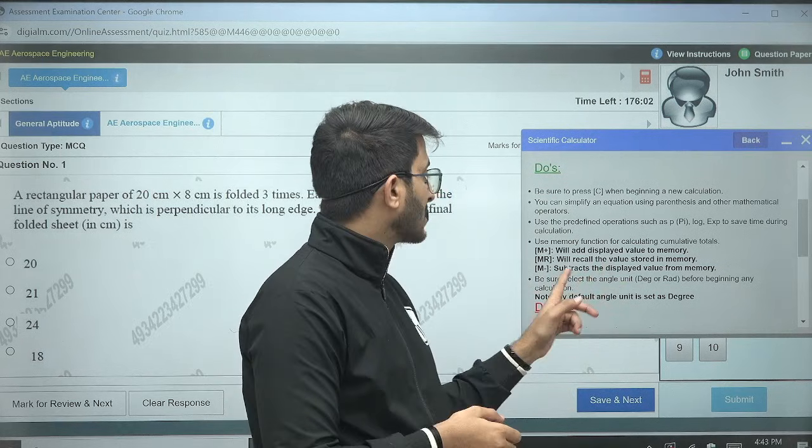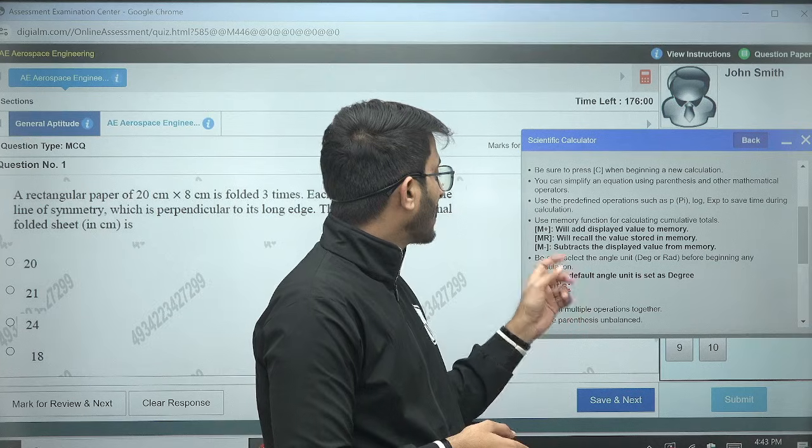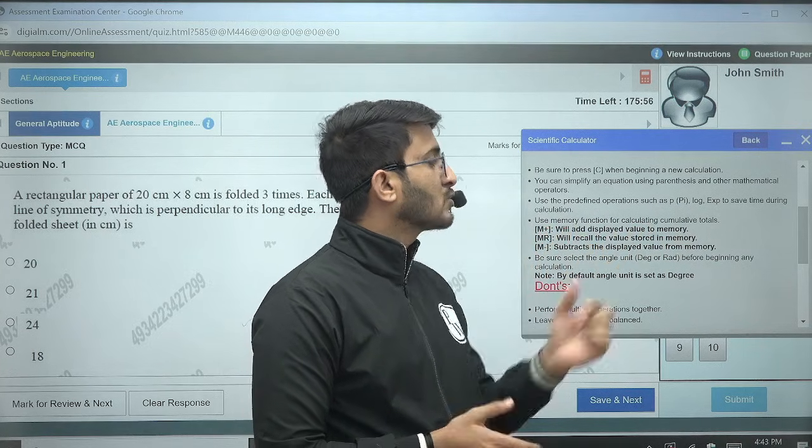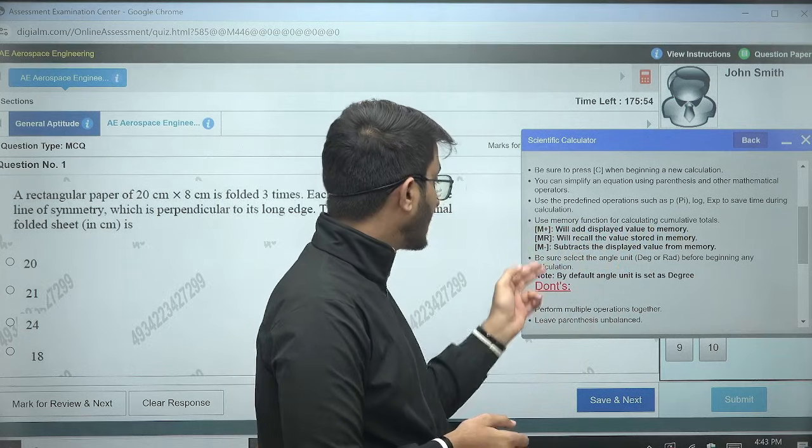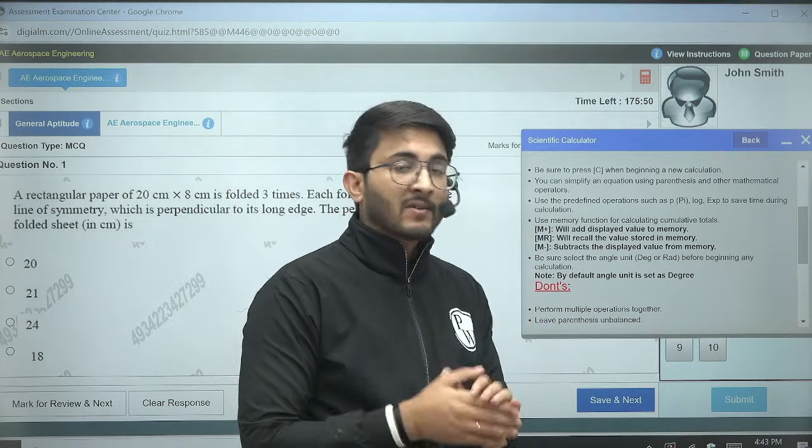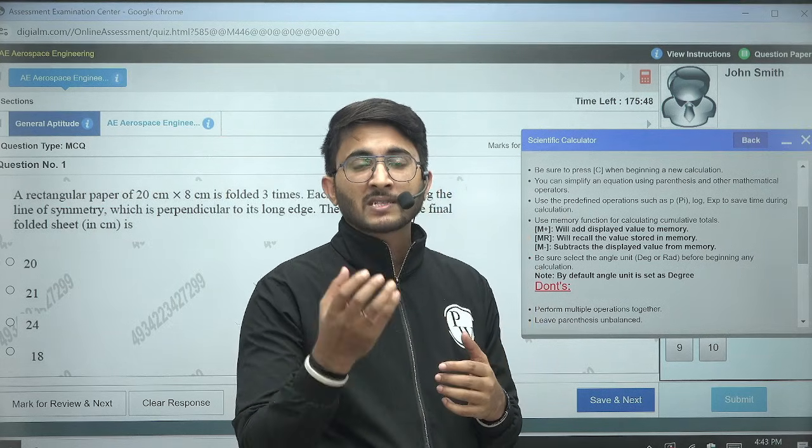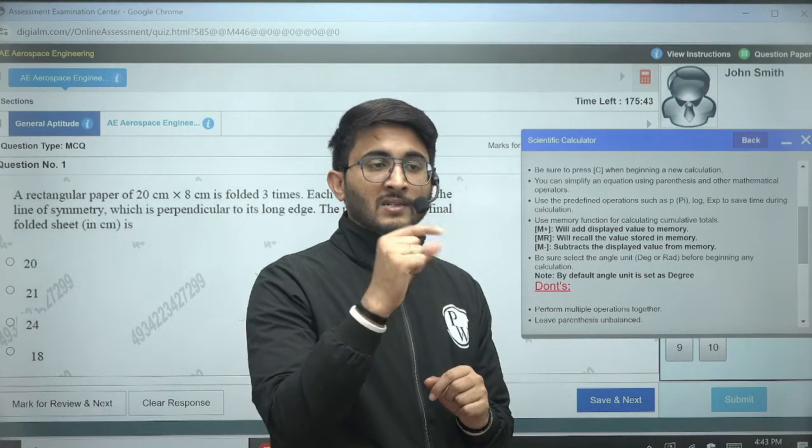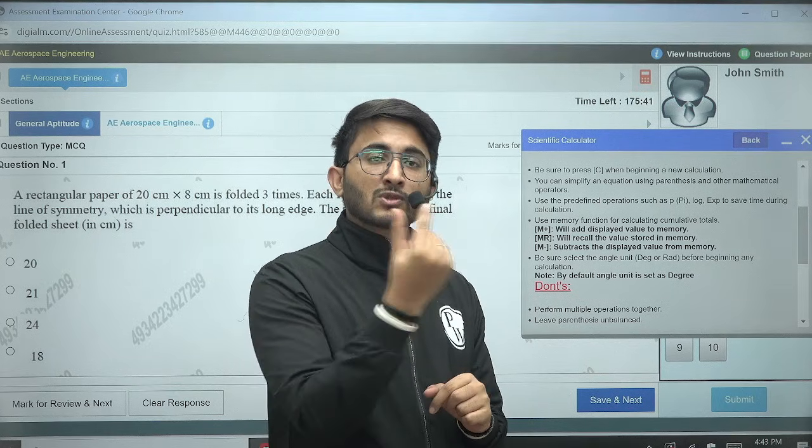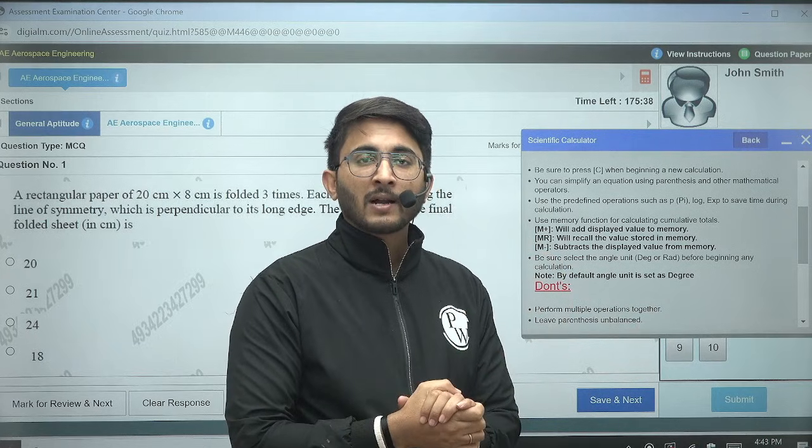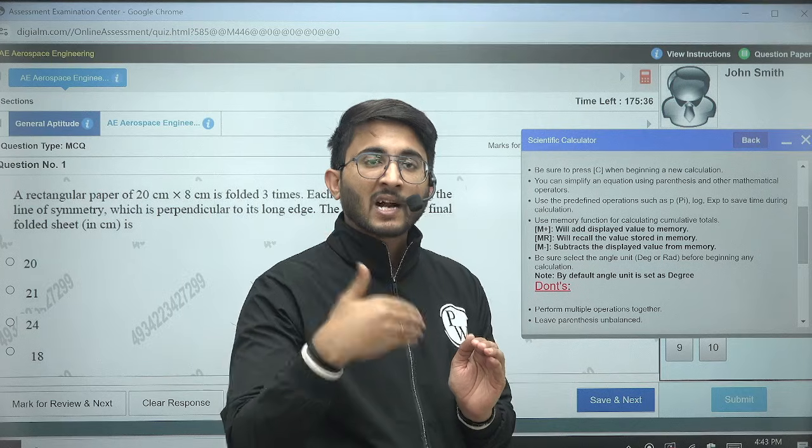As you know, there are BODMAS things there, so you can simplify by utilizing the various symbols while calculations. And definitely, M+ is available which will add displayed value to the memory. So guys, there are some specific three types available: M+, MR, and M-. M+ will help you to save some data. For example, if you are solving some question and while solving, whatever data comes, you want to save the data in calculator memory.